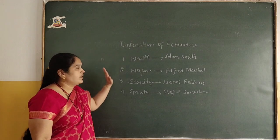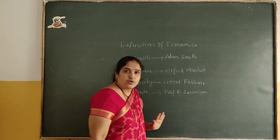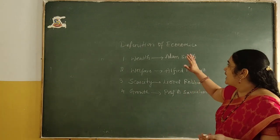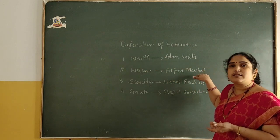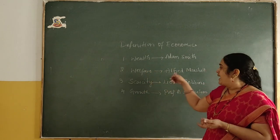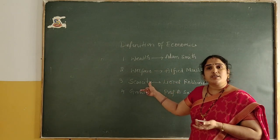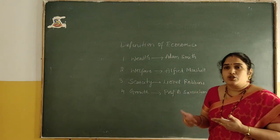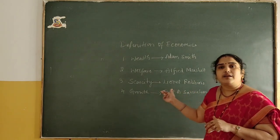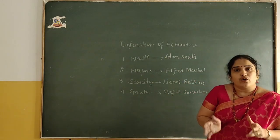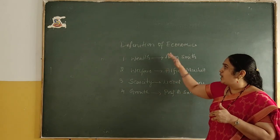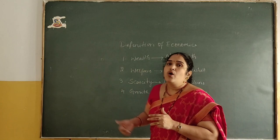All four definitions will be given in detail. We will learn about the four definitions, how these economists defined economics, and on what grounds each was criticized. Adam Smith gave it based on wealth. This wealth definition was criticized by Alfred Marshall, who shifted his emphasis from wealth to welfare. Then Robbins shifted from welfare to scarcity, because he pointed out that available resources are scarce. Professor Samuelson defined economics as allocating scarce resources to satisfy our unlimited wants with limited resources.